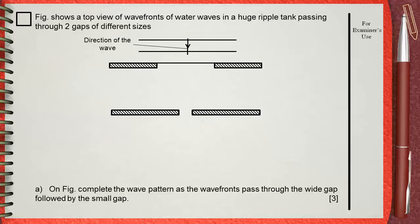This question is an important question because it includes the two types of diffraction of water waves through a wide gap which is much greater than the wavelength and through a small gap which is equal to or smaller than the wavelength.